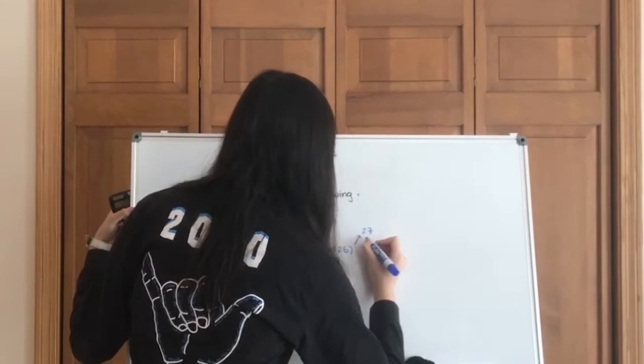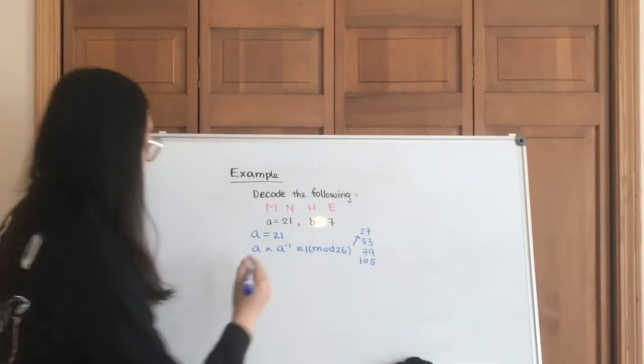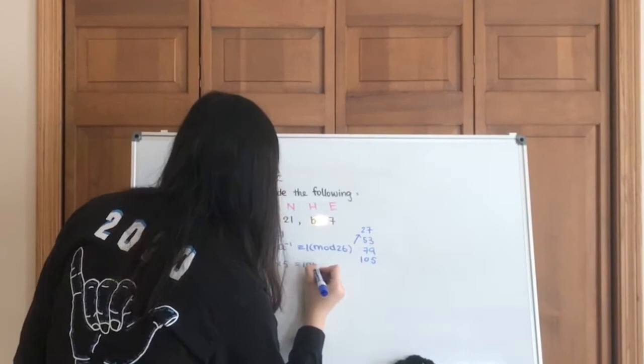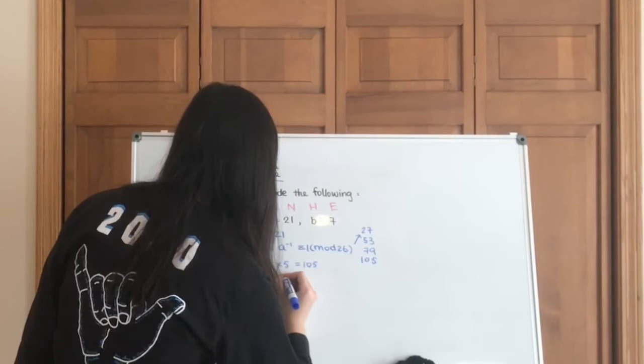So we can list out all those numbers first, not all of them, but for the first couple, 79, 105. So when you see the number 105, that should be kind of a ringer. Say hey, I know that 21 multiplied by 5 is going to give me 105, which is 1 in mod 26, which means that 5 and 21 are inverses. So the inverse of a is going to be 5.